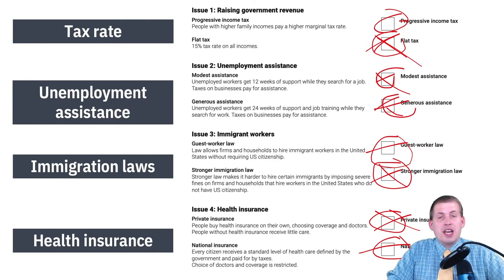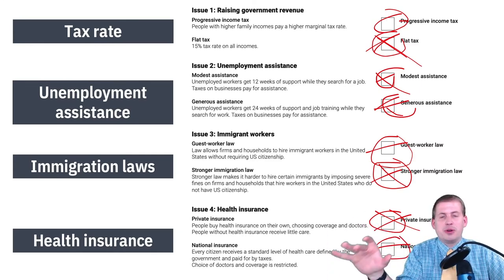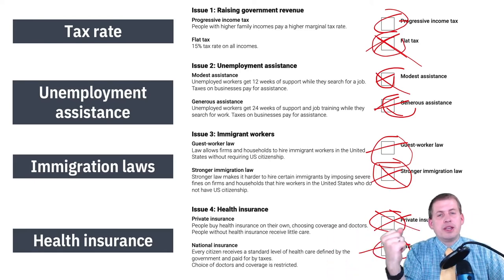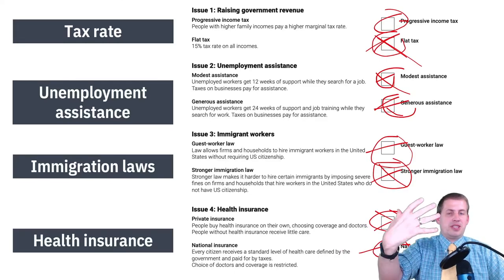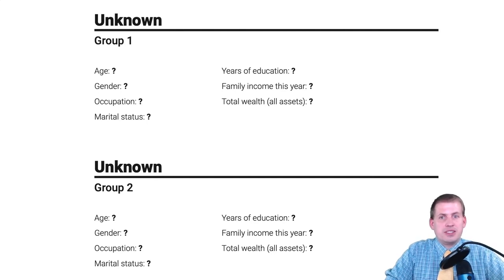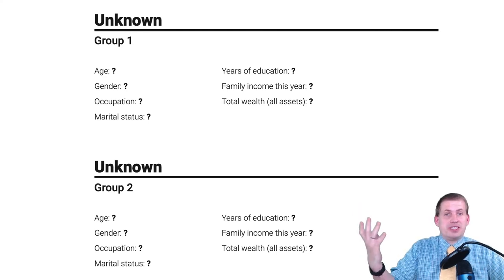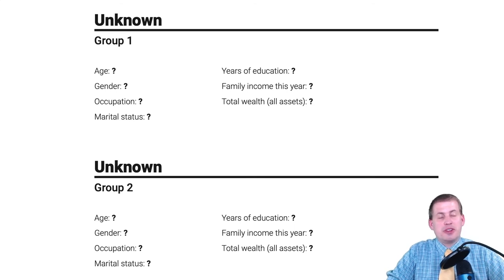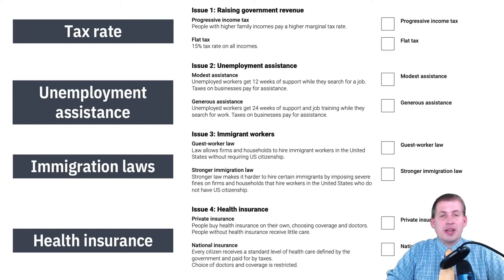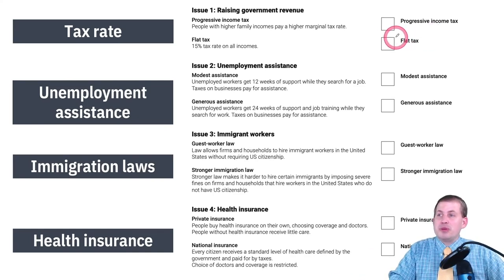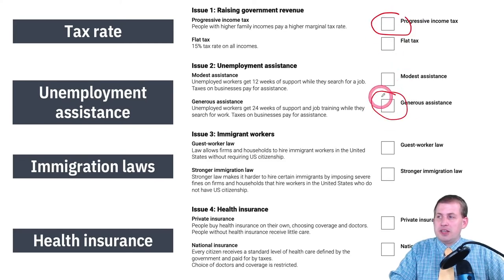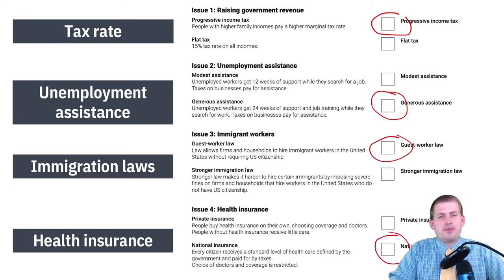But that's not the point of the simulation. The point is that after the first round of voting, I hand out new roles to everybody and shuffle them up. Every single group is completely unknown — you don't know your income, gender, occupation, or marital status. You meet as a group and decide what policies you want based on self-interest. And what ends up happening every single time — in Finland, Georgia, Utah, everywhere — is people always vote for progressive income tax, generous unemployment assistance, guest worker law, and national insurance.